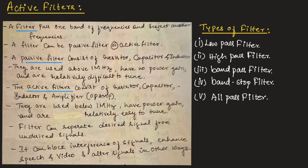First, let us understand what is a filter. A filter passes one band of frequency and rejects another band of frequencies. So, a filter is used to pass one range of frequencies and to reject another range of frequencies.